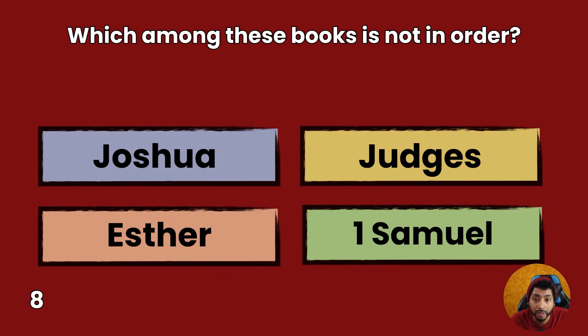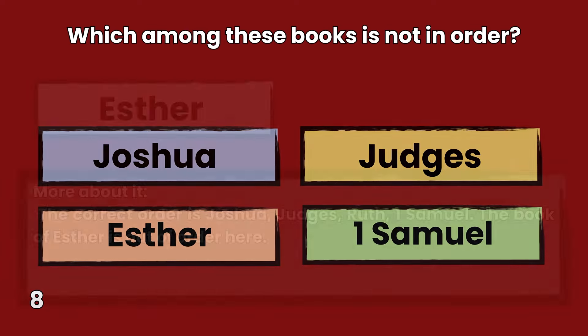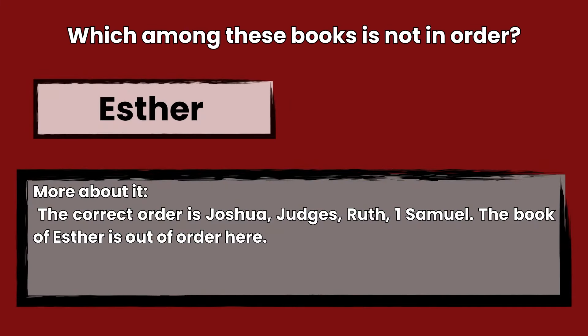Question 8: Which among these books is not in order? Joshua, Judges, Esther, or 1 Samuel? Answer: Esther. The correct order is Joshua, Judges, Ruth, 1 Samuel. The book of Esther is out of order here.